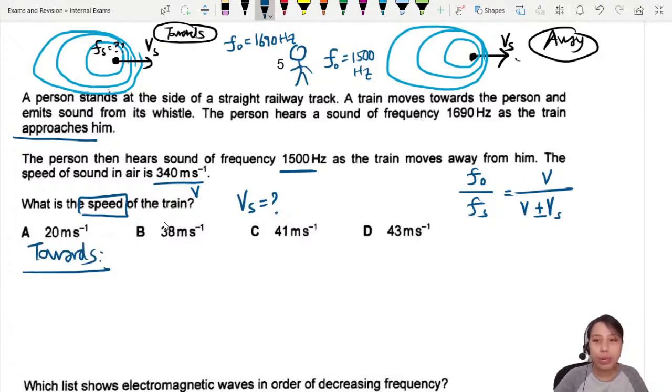This is going towards, so we are going to use the negative sign. If towards, negative. So let's plug in all the values. Towards, the person will hear 1690 over source frequency equals 340 over 340 minus v_s. We have two unknowns, means we cannot solve.